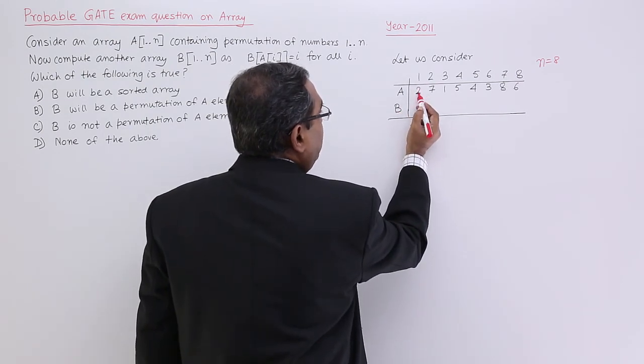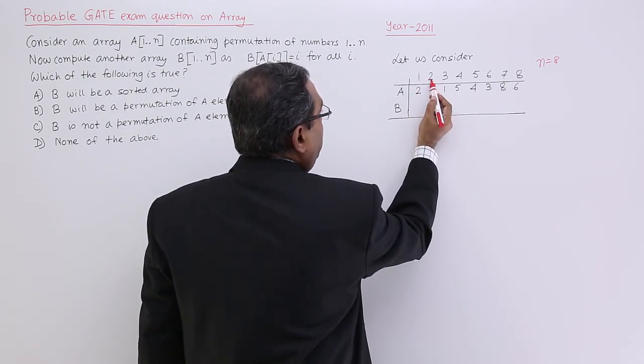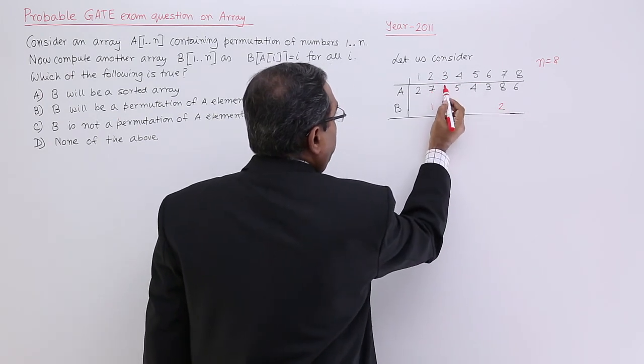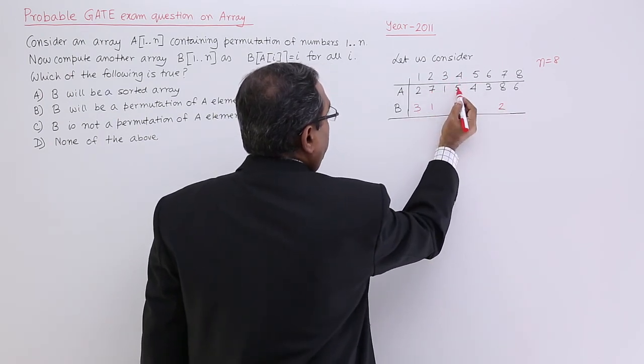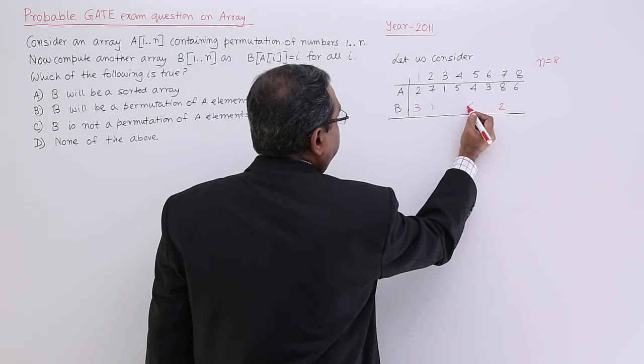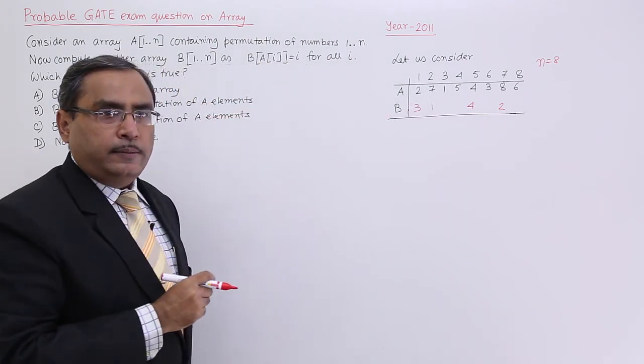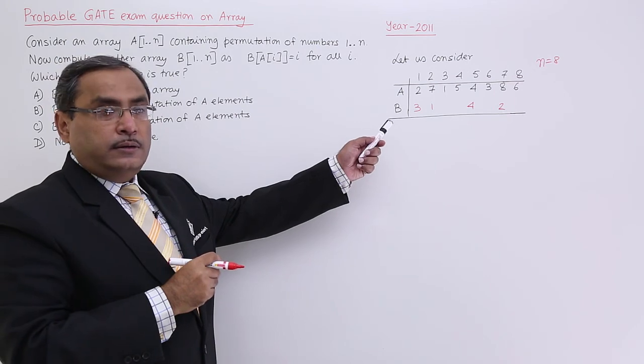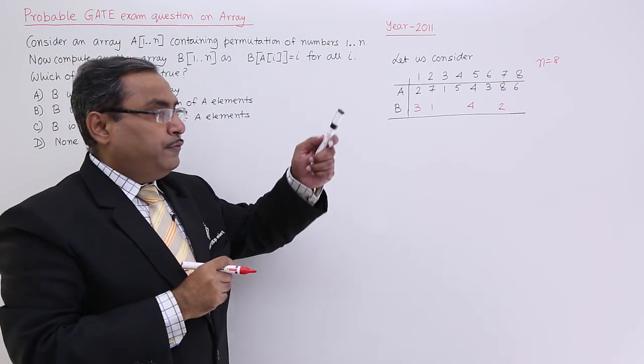1 will be placed at the second location, 2 will be placed at the seventh location, 3 at the first location, 4 at the fifth location. In this way, I shall go on filling up. And after filling up this one, I can confirm without going for the rest.